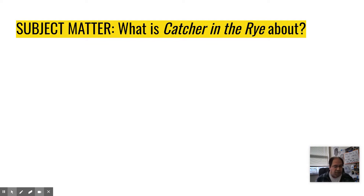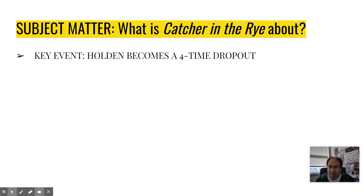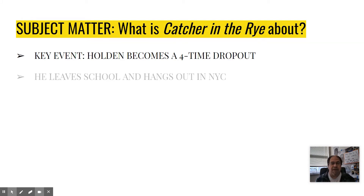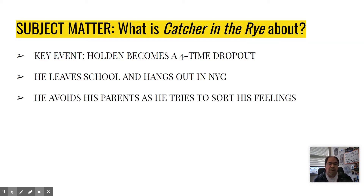In terms of Catcher in the Rye, the subject is that for the fourth time, Holden has decided to drop out of school. He makes the decision on a Saturday and has until the following Wednesday when he'd normally go home, but he's taken off a few days early. He's going to hang out and bum around New York and try to decide what to do — he hasn't told his parents yet. He spends several days on his own in New York City avoiding his parents while trying to sort out the feelings he's going through.